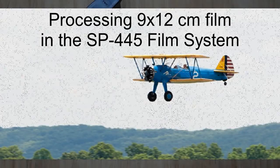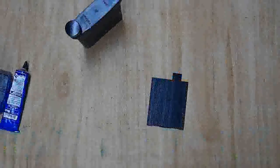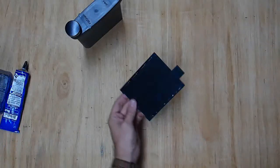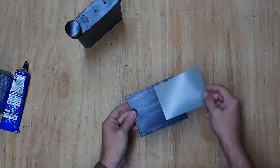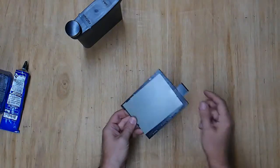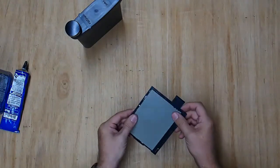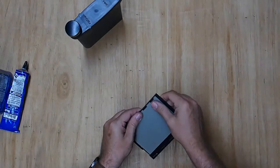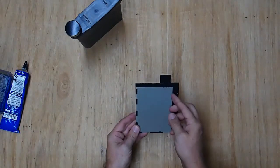We've had inquiries from people who want to process 9x12 film in our SP445 film system. The problem is pretty obvious given that 4x5 film is about 99.5mm in width and from what we can tell, the 9x12 is actually 88mm.